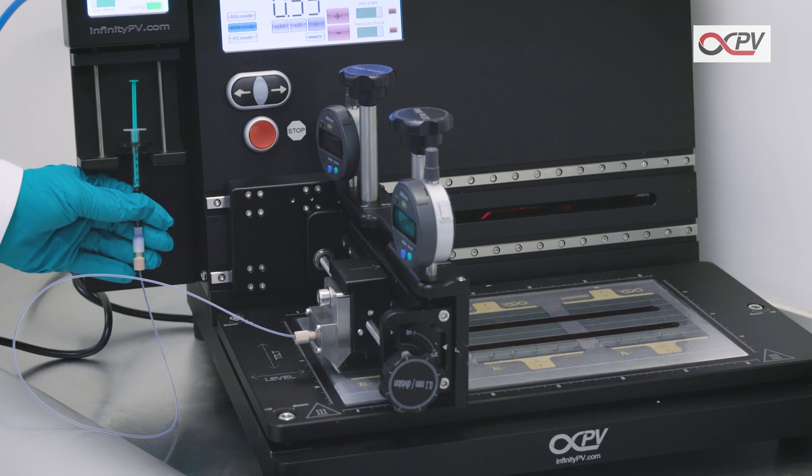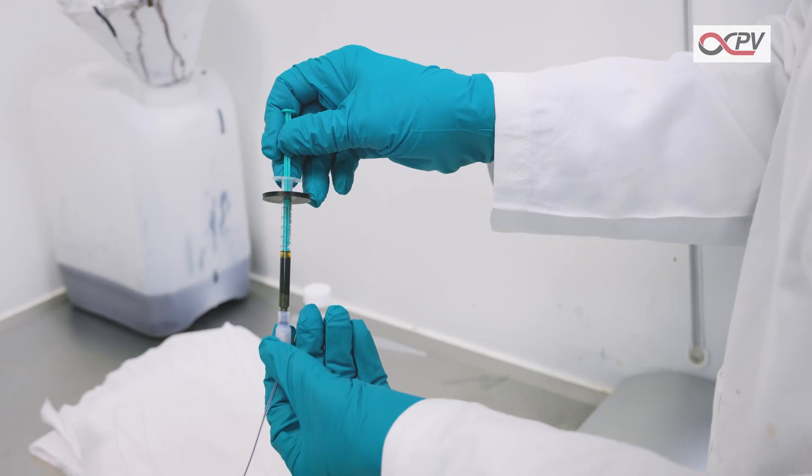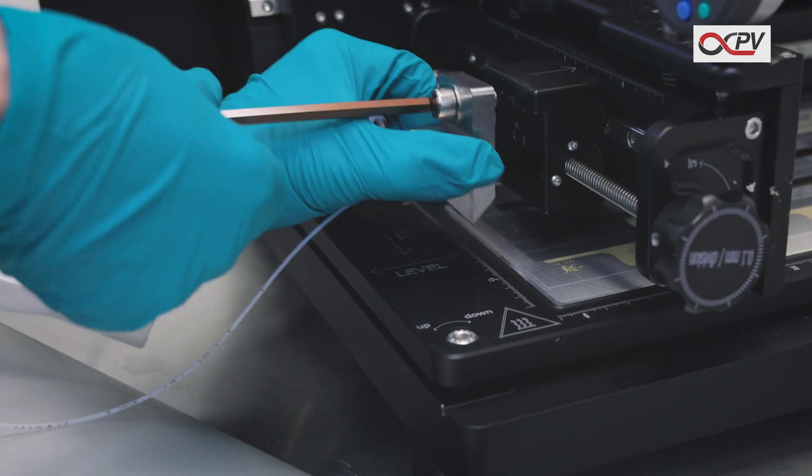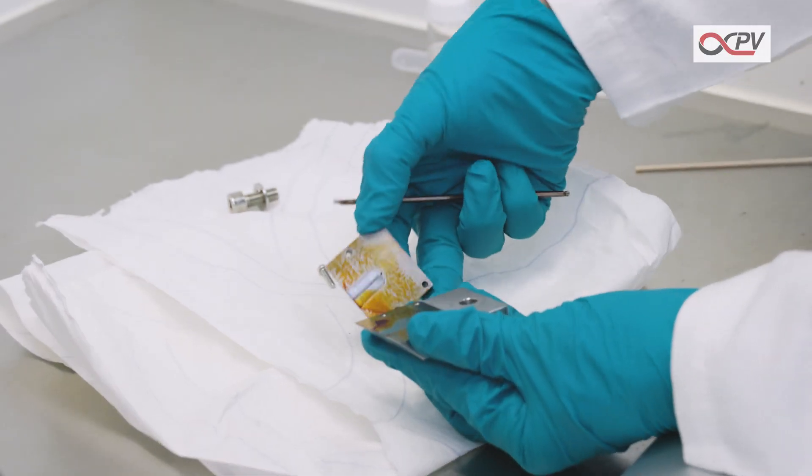Once the second stripe is done, detach the syringe and subtract the ink residue from the Slot Dye Head. Detach the Slot Dye Head, disassemble it, and clean it.